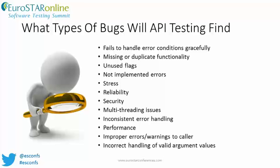API testing can be very effective in identifying specific types of bugs. But we must remember Boris Beiser's pesticide paradox, which essentially states that no single approach to testing is capable of finding all classes or types of bugs. Testing complex systems requires multiple approaches and perspectives throughout the complete development cycle. Some bugs, such as duplicate functionality and unused flags, might only be found through API testing. Other bugs, such as incorrect handling of valid argument values and failure to handle error conditions, might be exposed through other testing methods, but API testing may find them sooner and more efficiently.